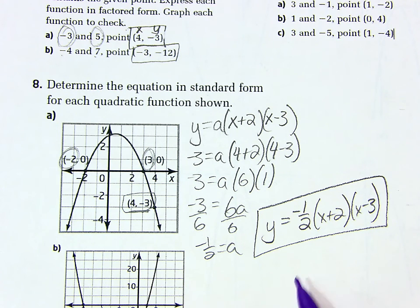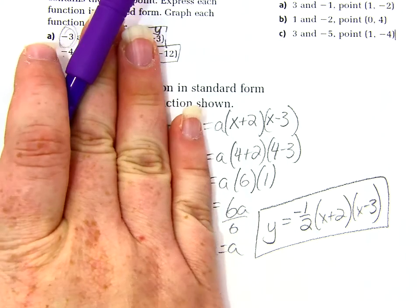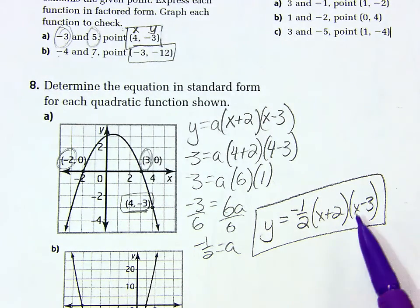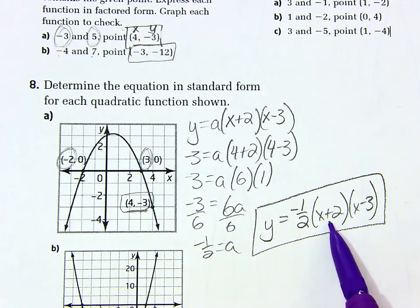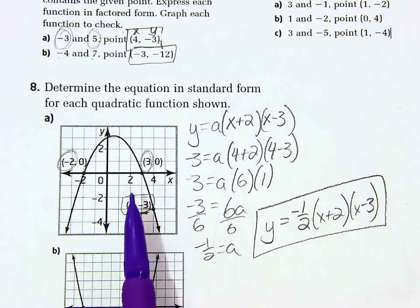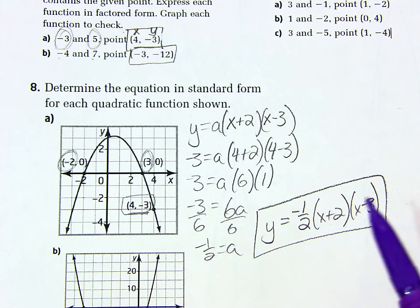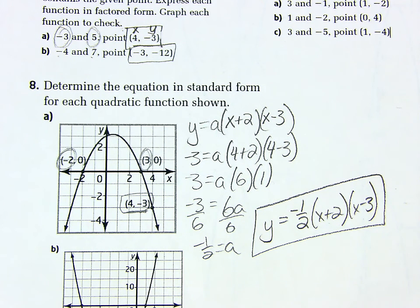A quick way to check yourself: looking at the equation, I know it crosses the x-axis at negative 2 and positive 3 — and yes, it really does. I also know it opens downward and should be a little on the wide side. It is down, and if A were 1, the parabola would be narrower, so that checks out. That's it for this — easy enough!